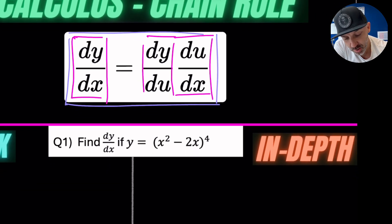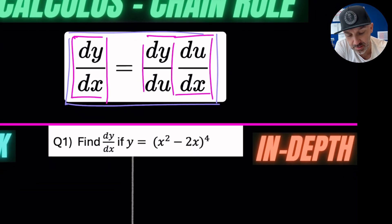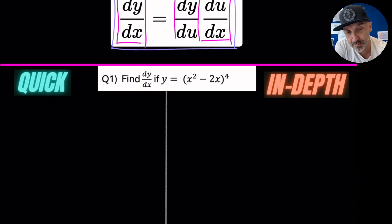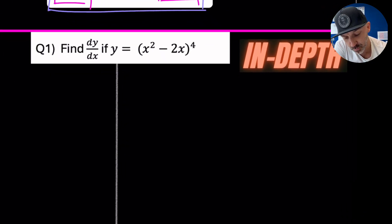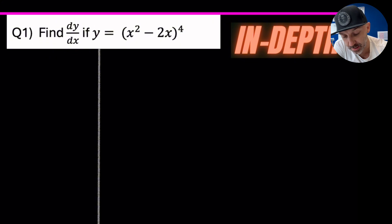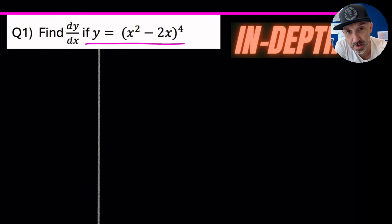So what does it actually mean? We can explore this through an example. I'm going to work through it in depth using the explicit chain rule, and then show you a quicker method. Question one asks us to find the derivative of y with respect to x — dy/dx — where y is equal to (x² − 2x) to the power of 4.